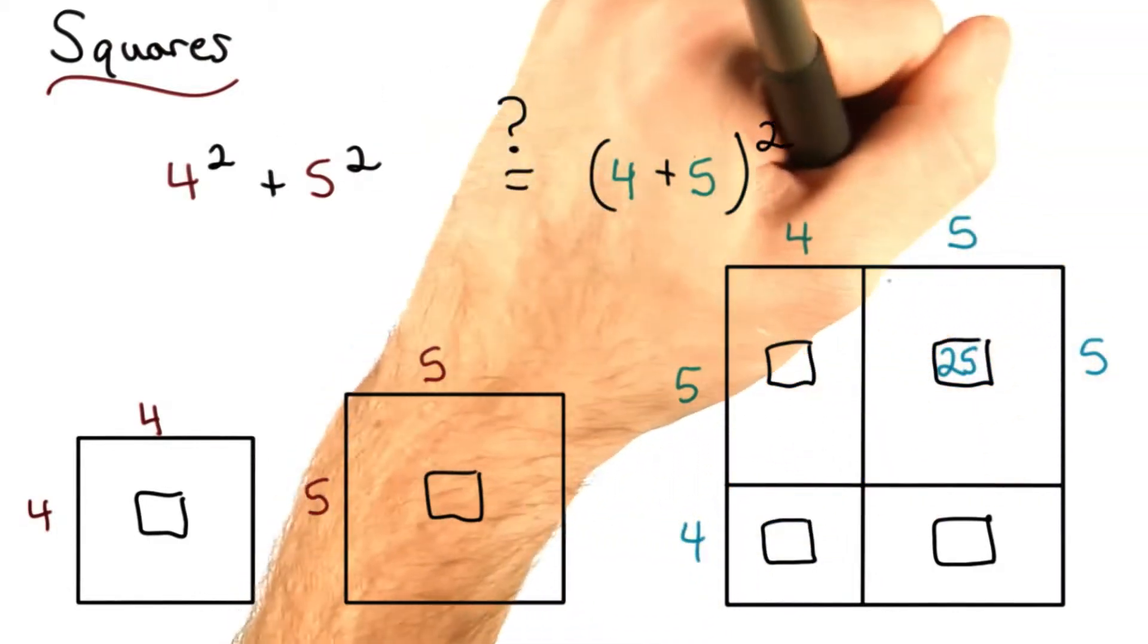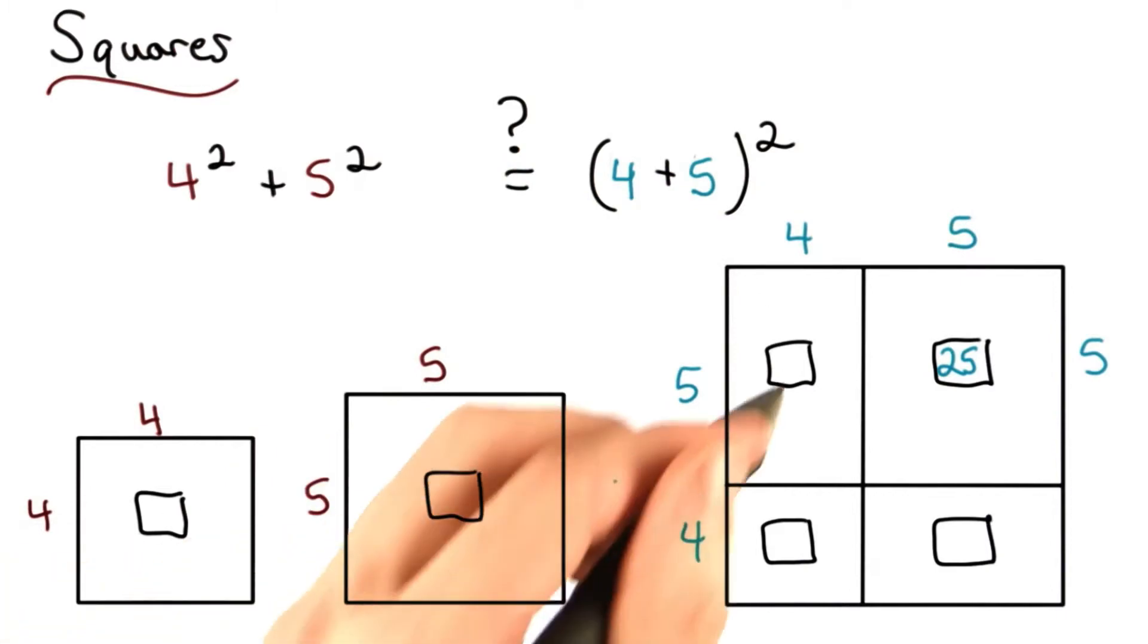You multiply the sides of a rectangle or a square to get the area. Go ahead, fill in these other areas.